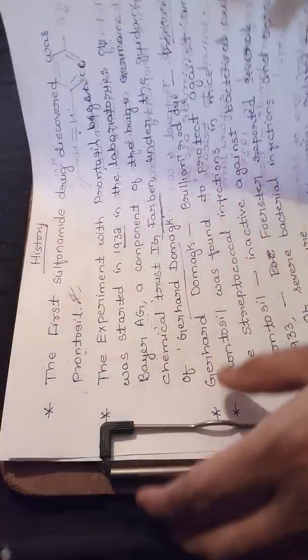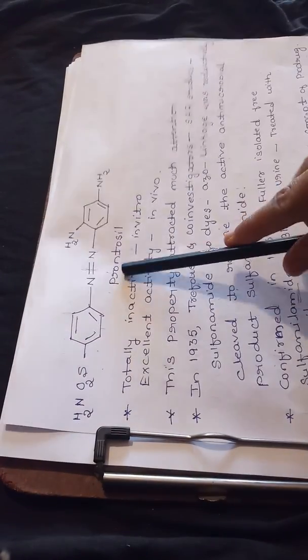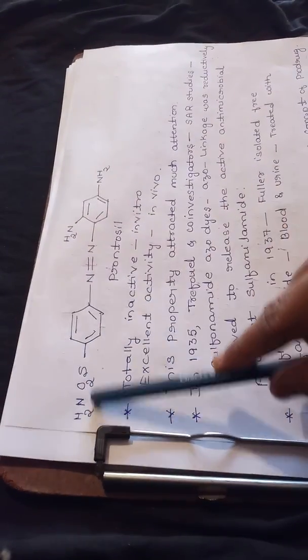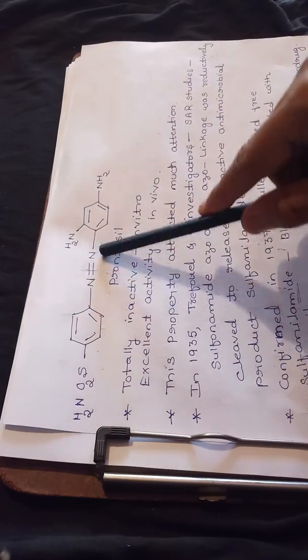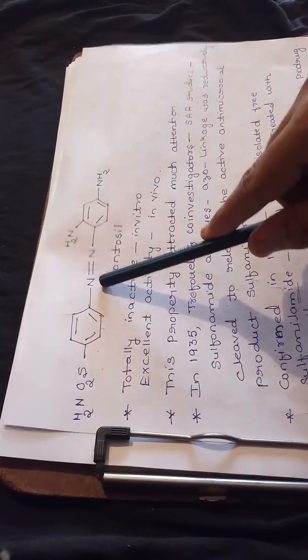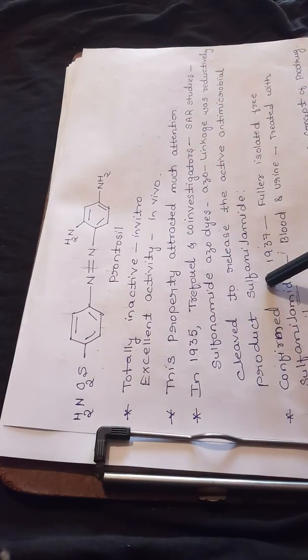Let us see the structure of prontosil. In prontosil's structure, you can find that there is an SO2NH2 group, a benzene ring, an azo linkage (N=N), and a 1,2-diaminobenzene ring is also present.